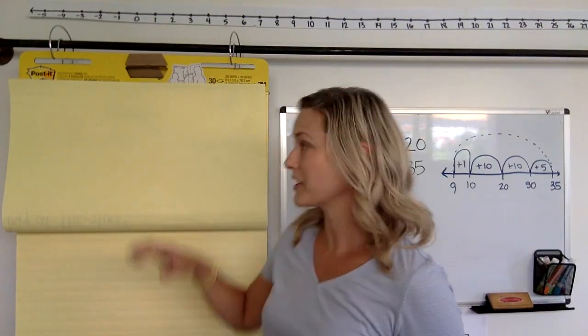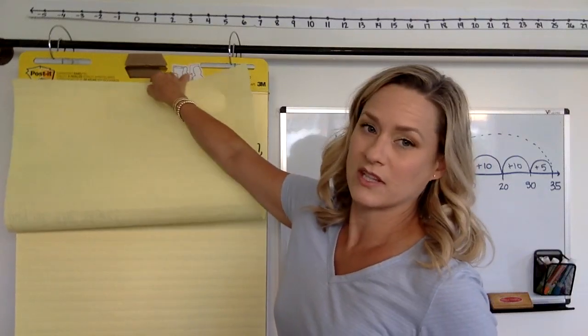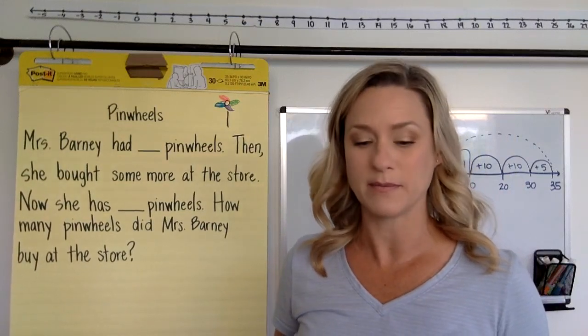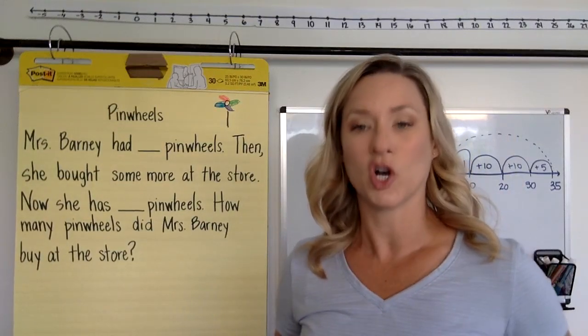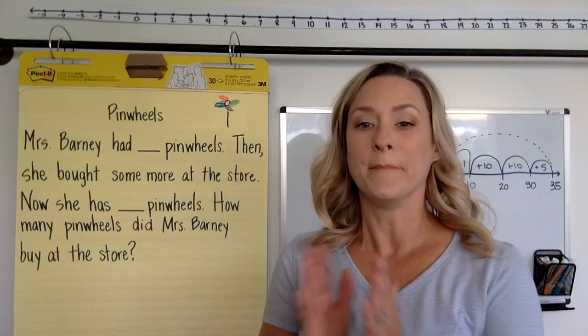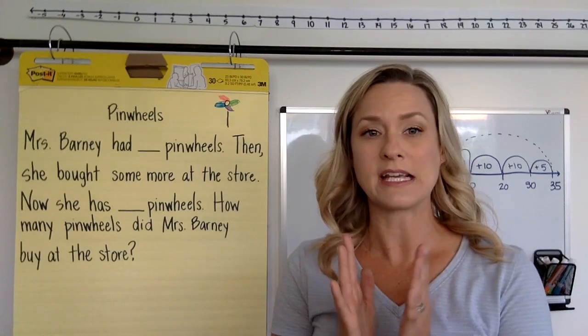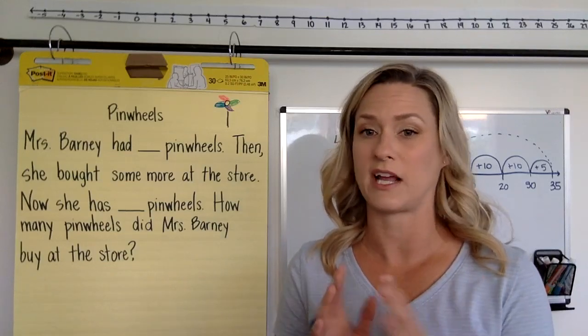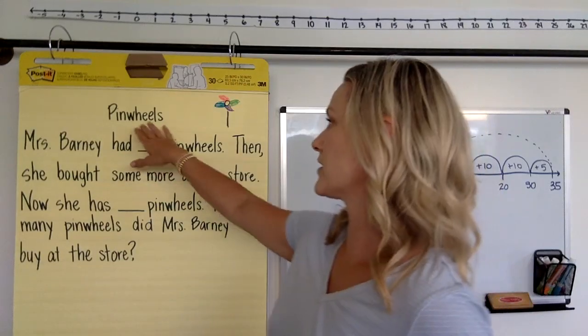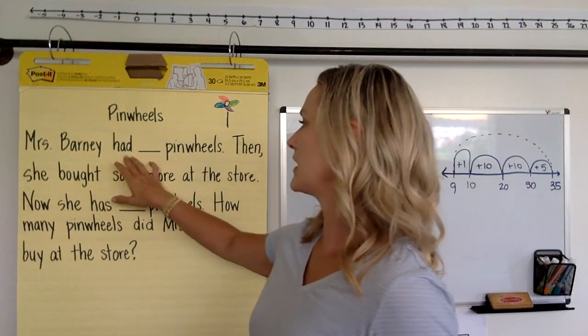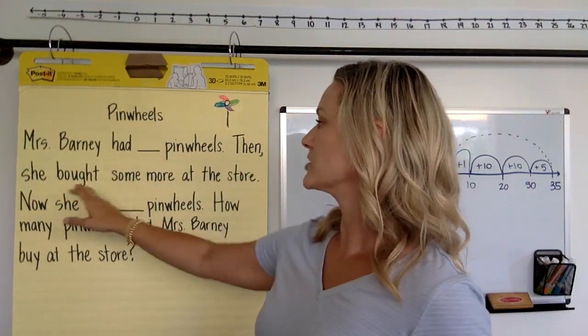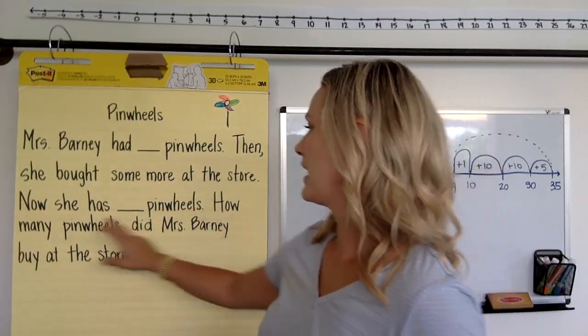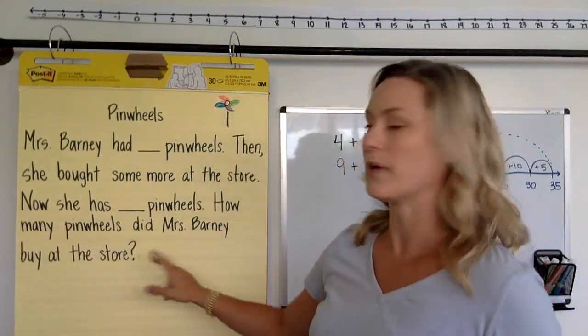So I'm going to show you now the story that we're going to look at. So this story is called a join change unknown problem type. So again, this is a harder problem type. So make sure you're really having your kid think about the story. We never, never tell our kids this is addition or this is subtraction, and I hope today you see why. Alright, so this is called Pinwheels. Mrs. Barney had some pinwheels. Then she bought some more at the store. Now she has this number of pinwheels. How many pinwheels did Mrs. Barney buy at the store?